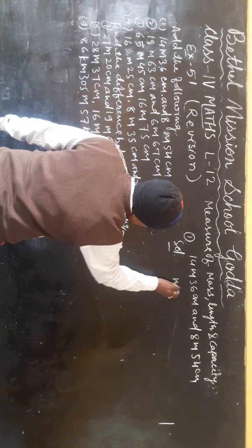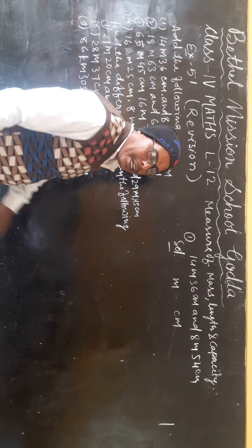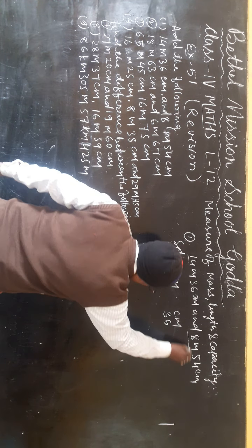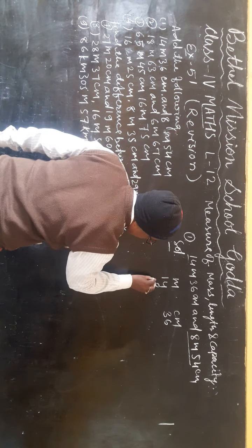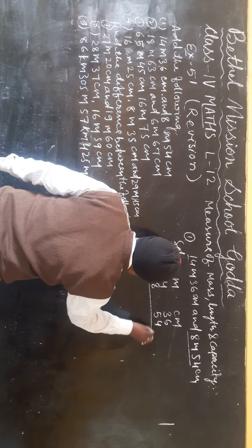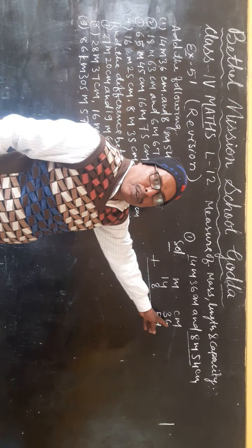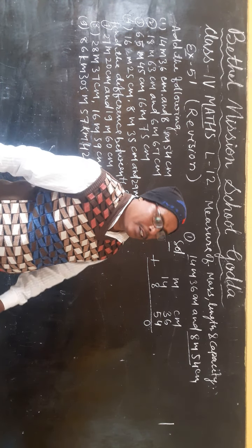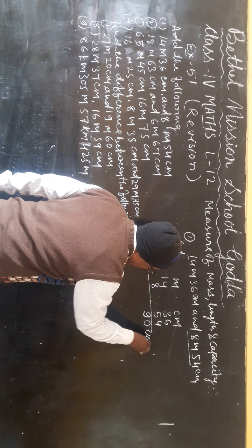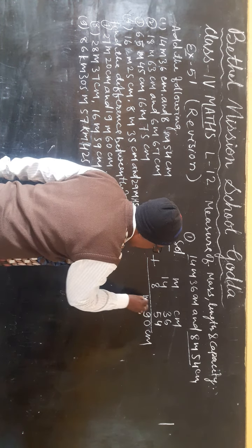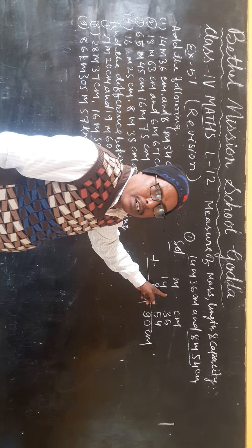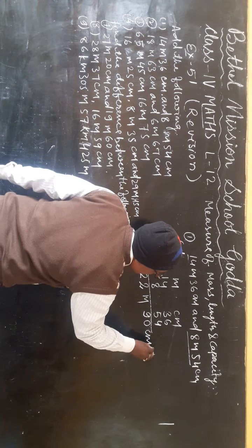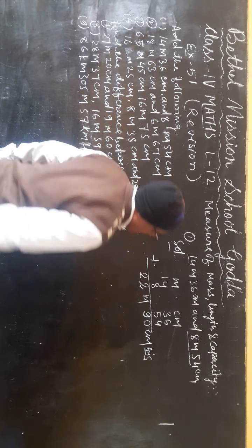Solution: here write meter, here write cm. Meter: 14, cm: 36. And this column: 8 meter and 54 cm. 6 plus 4 is 10, write 0, carry 1. 3 plus 5 is 8, plus 1 carry is 9. That is 90 cm. For meters: 8 plus 4 is 12, write 2, carry 1. 1 plus 1 is 2. Answer: 22 meter 90 cm.